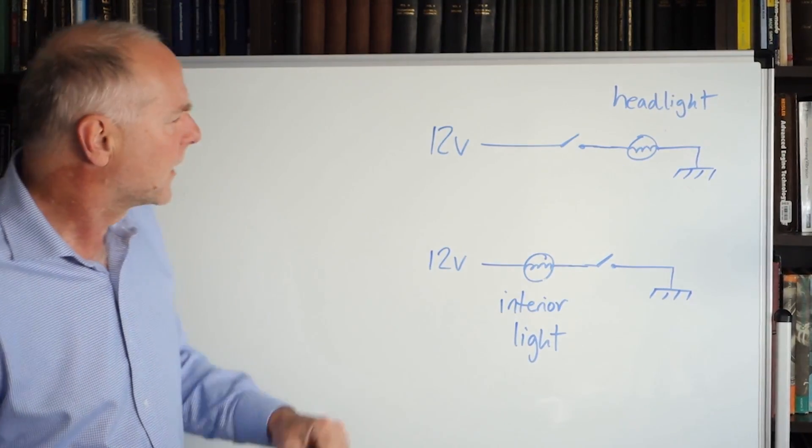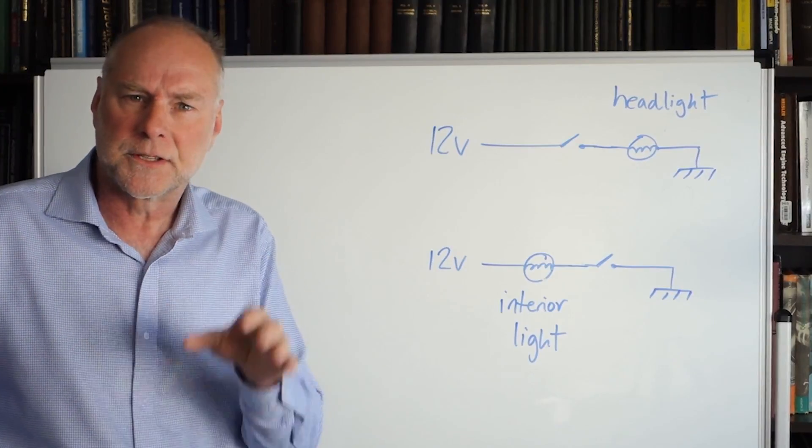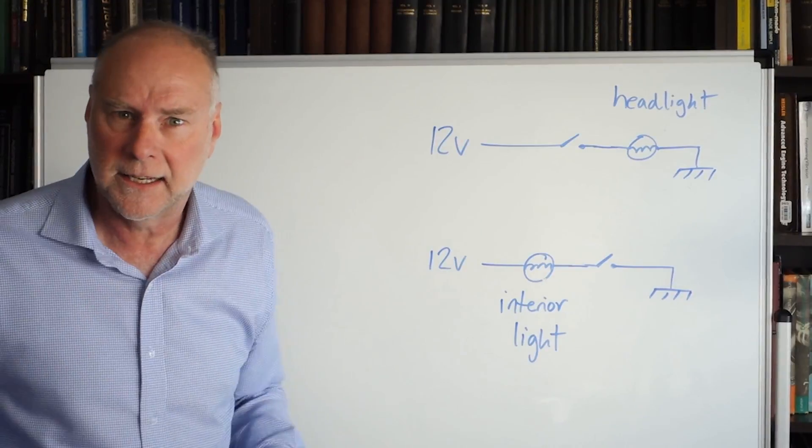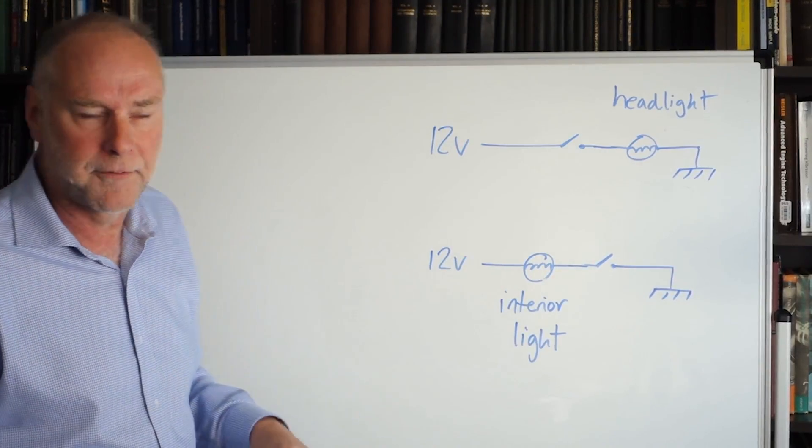So how do you wire it in? Well, let's have a look at the two circuits. The first is the headlight circuit, and the other one is the interior light circuit. These are already in your car. I'm just showing you what they look like in diagram form.